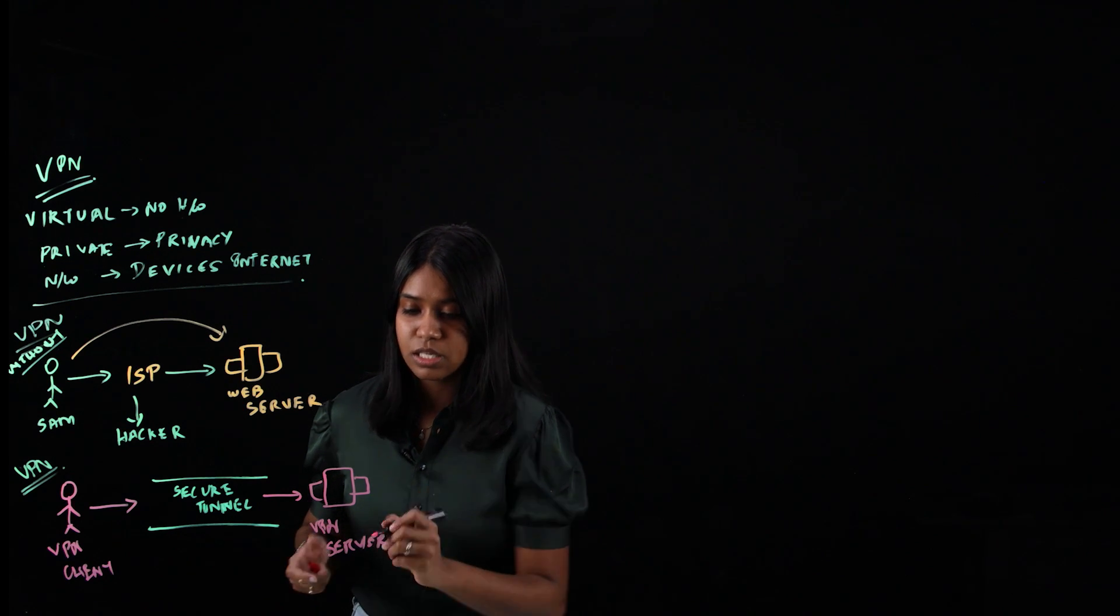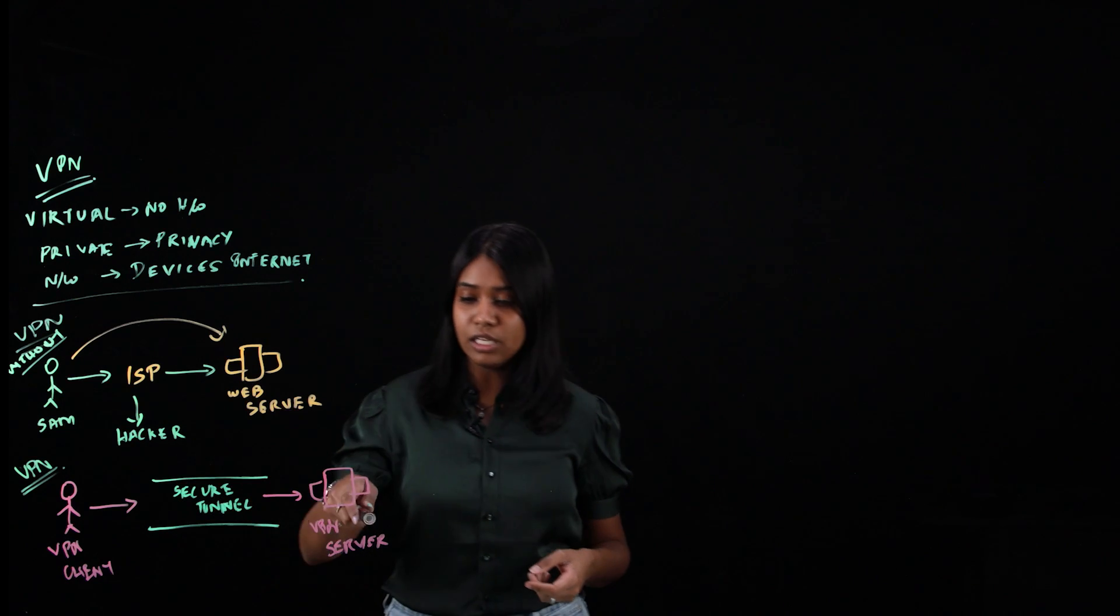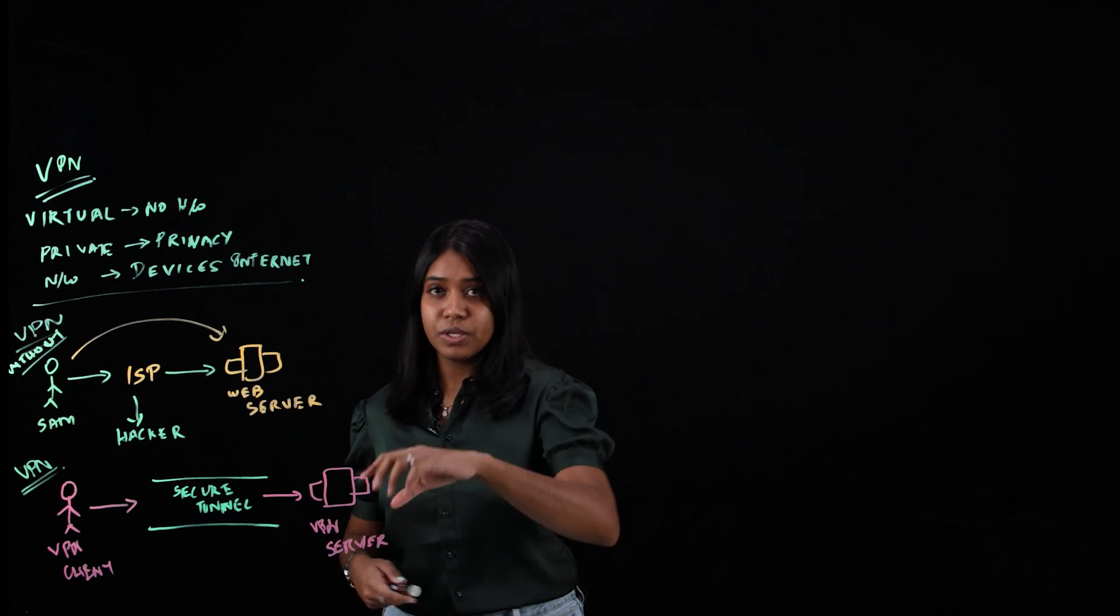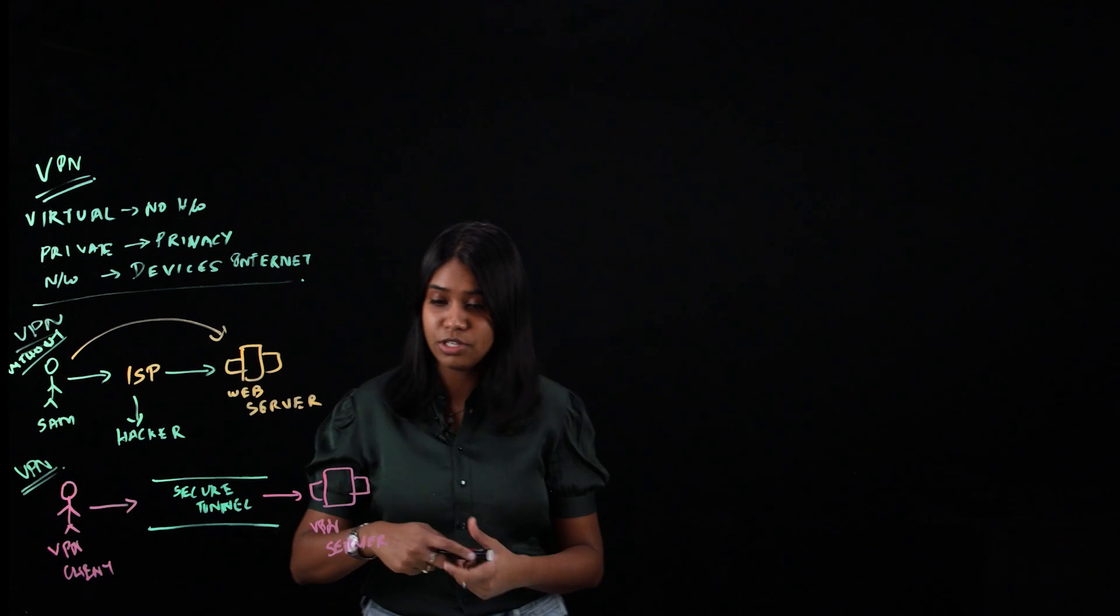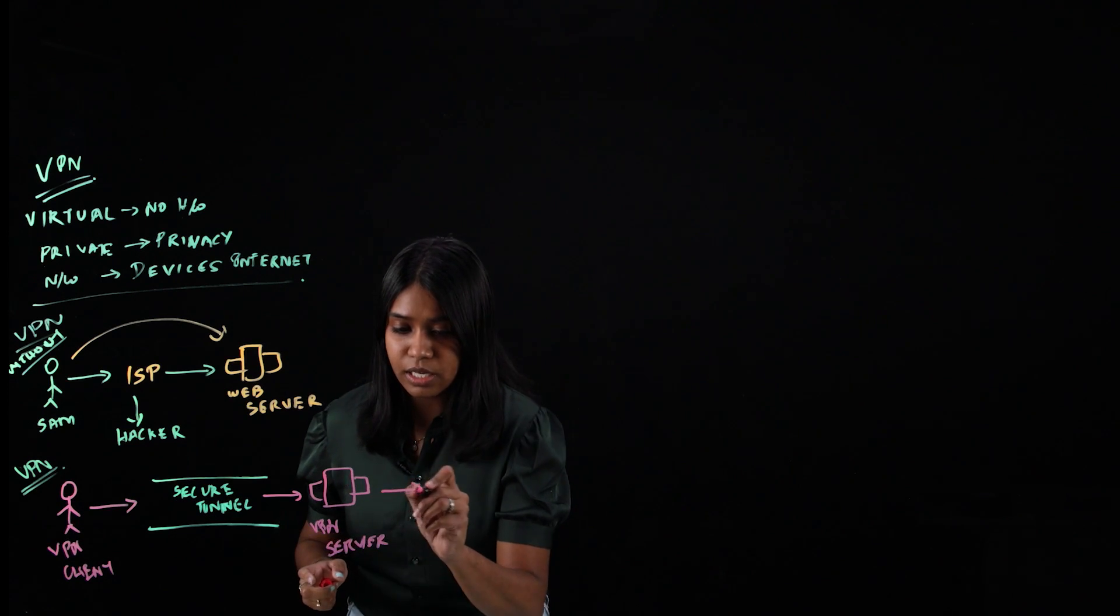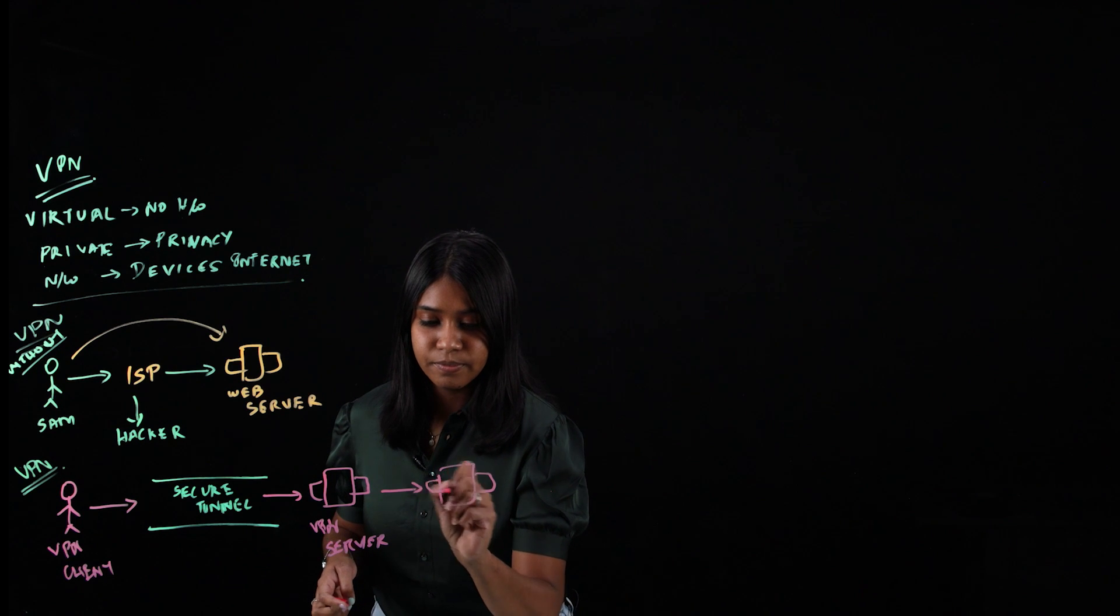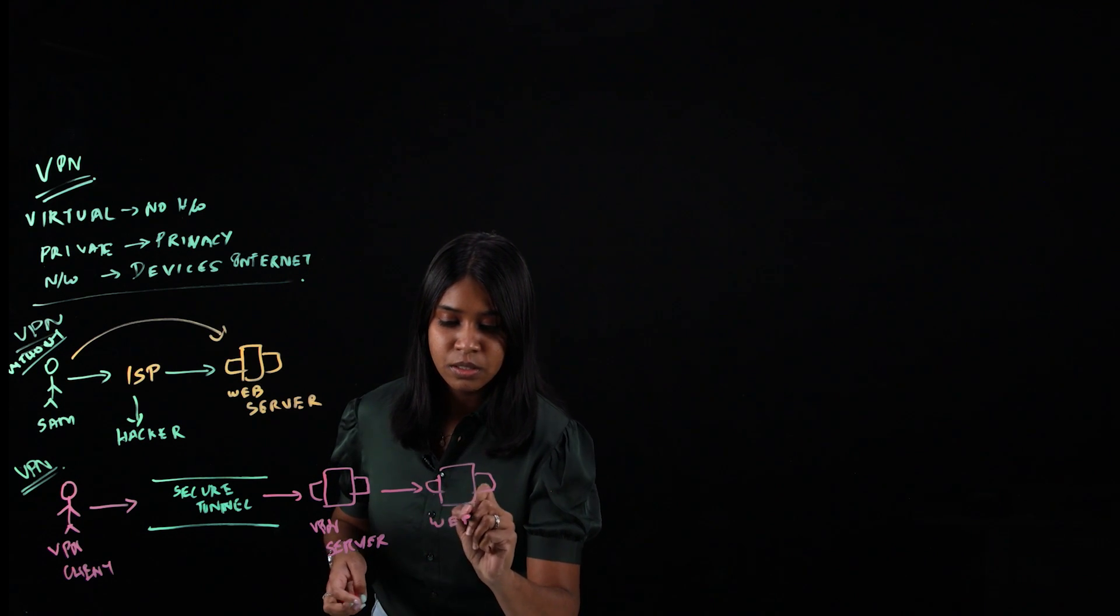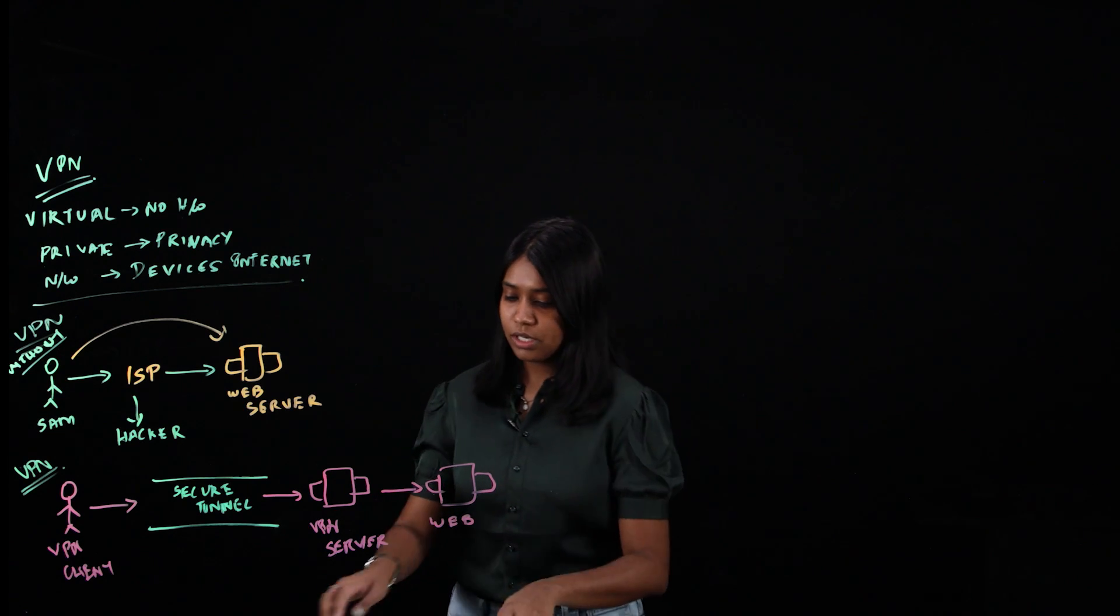And what the VPN server does is it decrypts the data. It has the encryption key and it decrypts the data. And what the VPN server does is it puts its own IP address in the place of Sam's IP address. And now it connects to the actual web server. And what happens here in the secure tunnel?